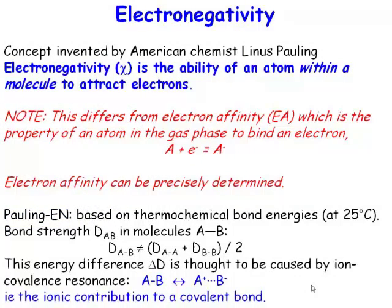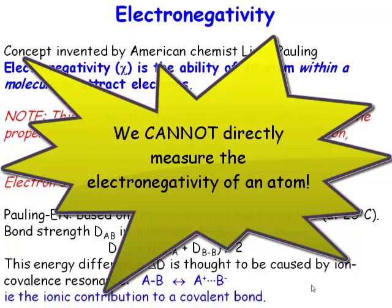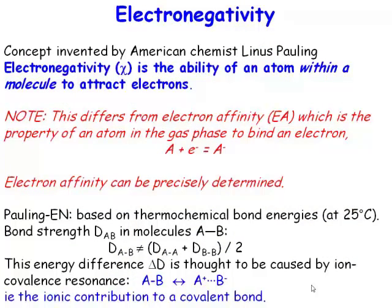Well, these electronegativity values are actually based and derived from thermochemical measurements. So we cannot directly measure the electronegativity of an atom, but it can be inferred if you collect together lots of thermochemical data from lots of different compounds. And that's what Linus Pauling did.